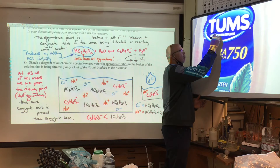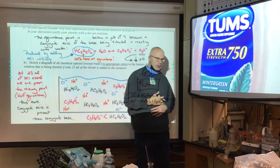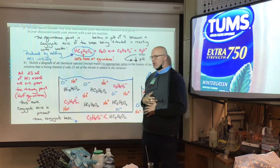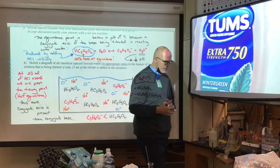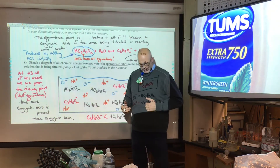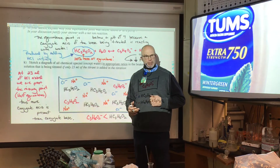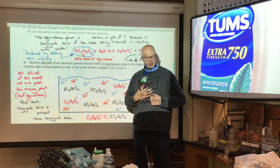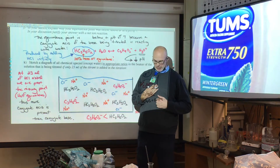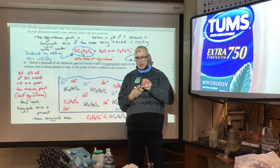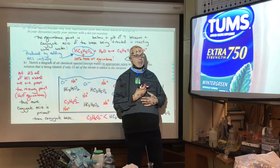Antacids are things that we take as humans to help neutralize the extra acids we could be producing in our stomach. Whether it's acid reflux—where we shoot acid through a sphincter into our esophagus and get pain—it's called heartburn because the esophagus runs right behind the heart, so it feels like it's in our heart. There are all different reasons why we overproduce some of the acids.